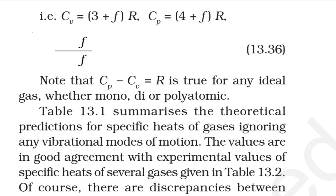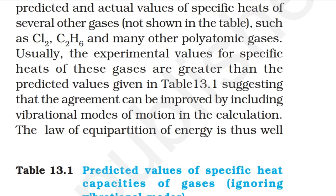The predicted values are in good agreement with experimental values of specific heat for several gases given in table 13.2. There are discrepancies for several other gases such as chlorine, C2H6, and many other polyatomic gases, where experimental values for specific heat are generally greater than predicted, suggesting that the agreement can be improved by including vibrational modes. The law of equipartition of energies is thus well verified experimentally at ordinary temperatures.